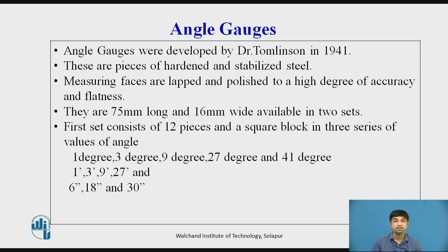One set consists of 12 pieces and a square block in 3 series of values of angle. So here the square block means the 90 degree angle gauge perpendicularity. So these are the various series: 1 degree, 3 degree, 9 degree, 27 degree and 41 degree; 1 minute, 3 minute, 9 minute, 27 minute; and 6 seconds, 18 seconds and 30 seconds.